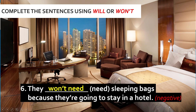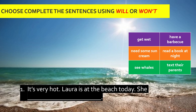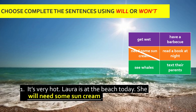Now let's try to complete these sentences using 'will' or 'won't' again, but this time the exercise is a little bit different — choices of answers are already given in the table. We are going to look through each question as well as the choices of answers. Once an answer is chosen, we cancel it out and fill in the blank. Number one: 'It's very hot. Laura is at the beach today. She...' Since the weather is hot and Laura is at the beach, she will need some sun cream. We cancel out 'need some sun cream'.